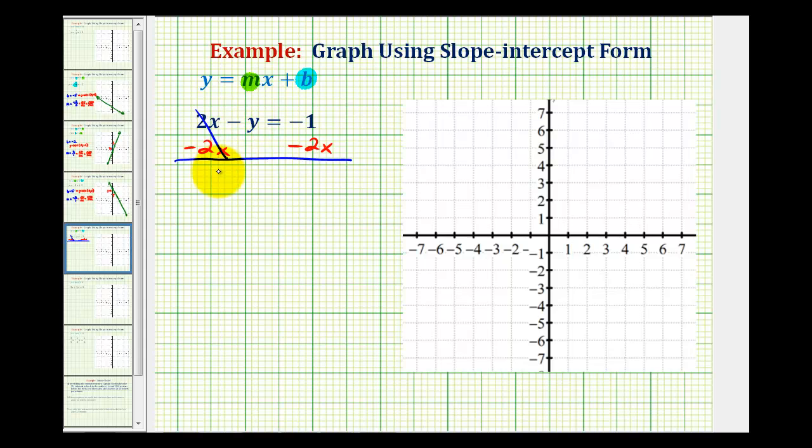This would be zero, so we have negative y is equal to, now we'll go ahead and put the x term first so it matches slope-intercept form. So we'll have negative 2x minus 1, and now if it helps, we can think of this as negative 1y. So to solve this for y, we'll have to divide everything by negative 1.